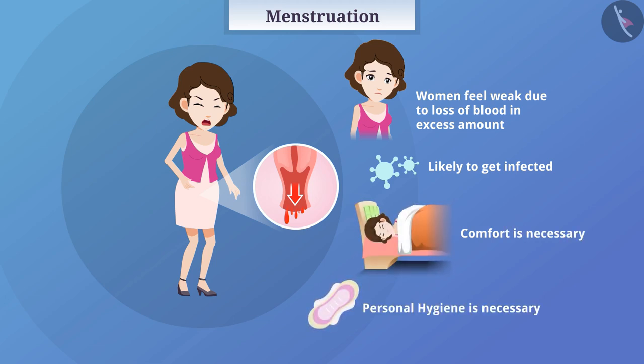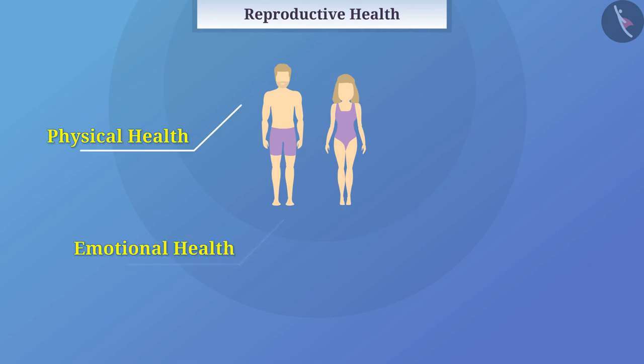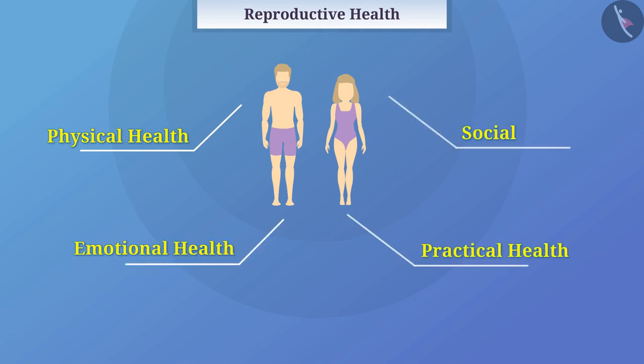Now let's know about reproductive health. Reproductive health refers to all aspects of reproduction such as physical, emotional, practical, and social health.